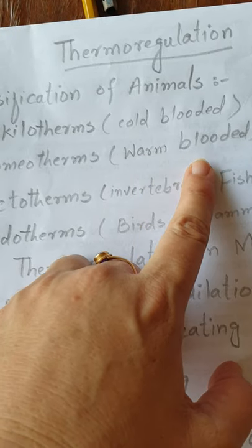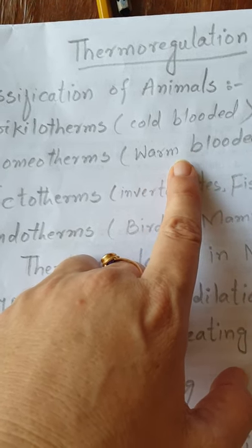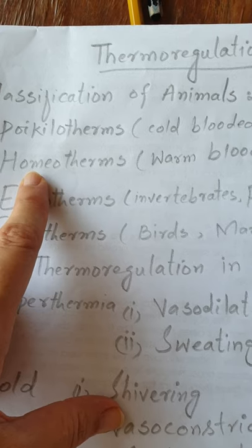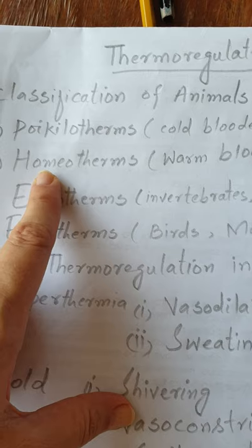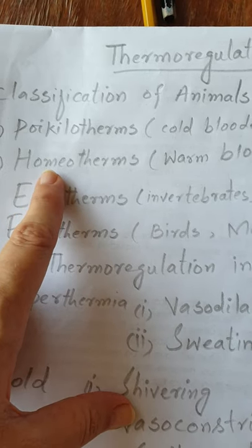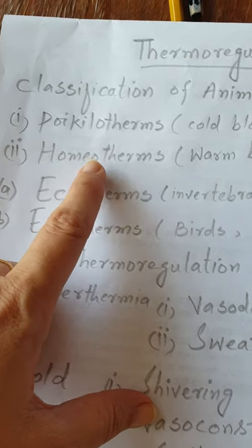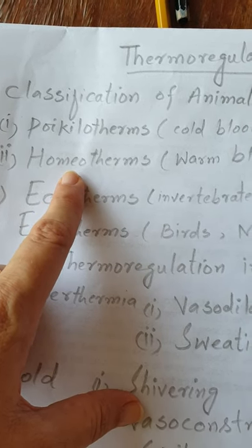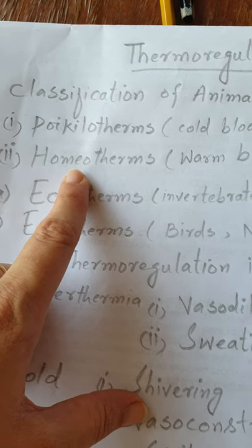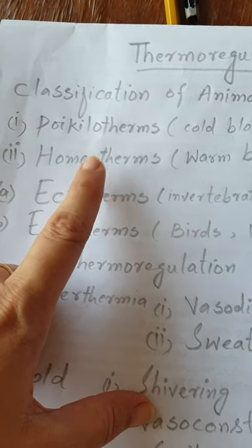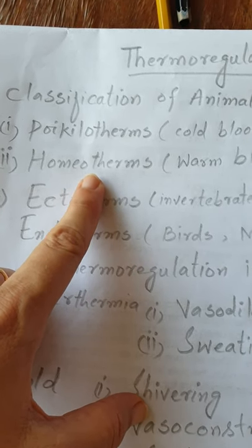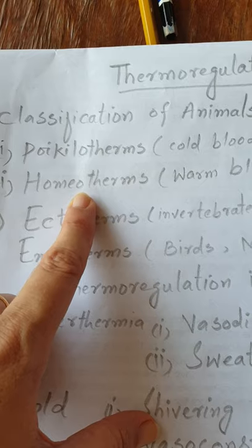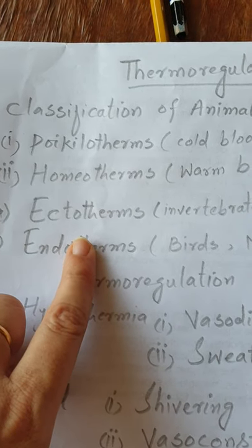The second category is the homeotherms, which are also known as warm-blooded animals. These are animals which maintain their internal temperature. Humans and birds are included in this category. They maintain their internal temperature for their internal activities whether the external temperature rises or falls — meaning in summer and in winter there will be no effect of external temperature on their internal environment, because their internal temperature remains constant.